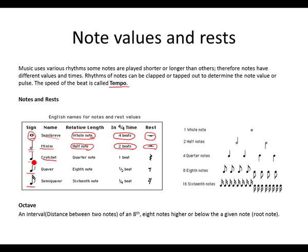A crotchet — in 4/4 time it is worth 1 beat. This is how a crotchet rest looks.